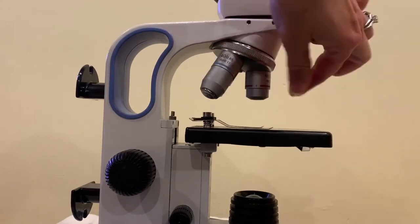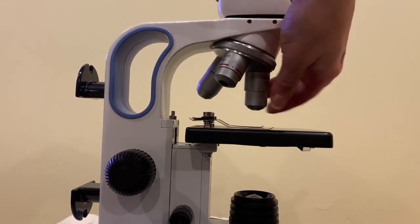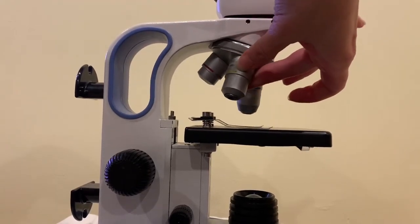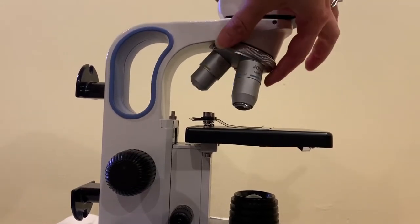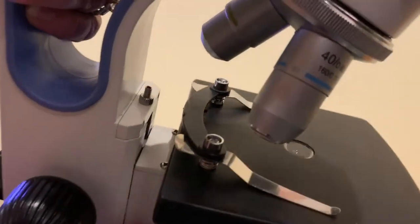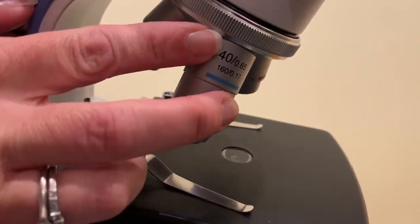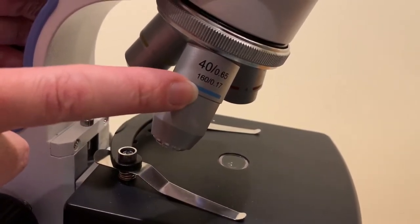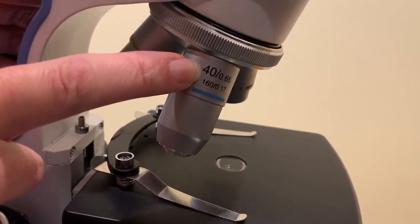Each one of these things sticking down here, each one of these is called an objective lens. And each objective lens has a different magnification written on it. So the largest has the number 40 written on it. So that means if we were just to look through this lens it would make an object appear 40 times larger than it would with the naked eye.